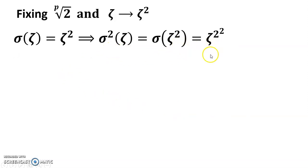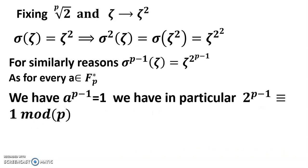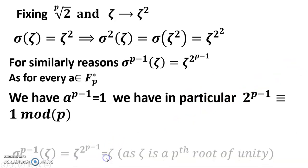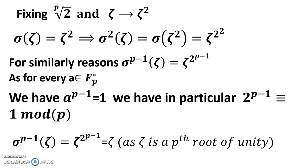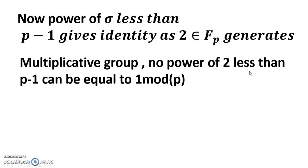Then σ²(ξ) = σ(ξ²) = ξ^(2²), and for similar reason σ^(p-1)(ξ) = ξ^(2^(p-1)). Now for every a in ℤ_p*, a^(p-1) ≡ 1 by Fermat's little theorem, so 2^(p-1) ≡ 1 mod p. Therefore σ^(p-1)(ξ) = ξ^(2^(p-1)) = ξ. Since 2 is a generator of the multiplicative group, no power of 2 less than p-1 can equal 1 mod p, so the order of σ is exactly p-1, and Gal(ℚ(2^(1/p), ξ) / ℚ(2^(1/p))) is isomorphic to ℤ_(p-1), generated by σ.